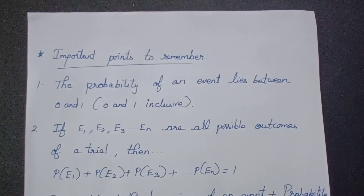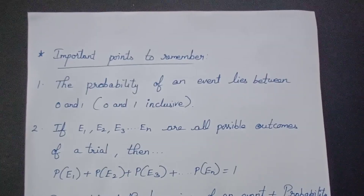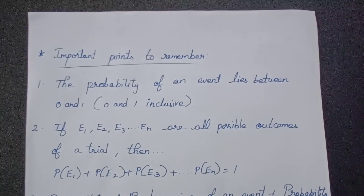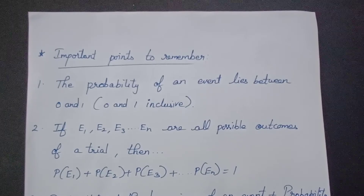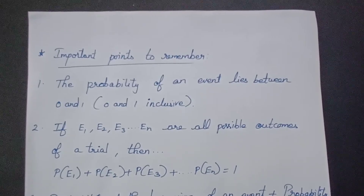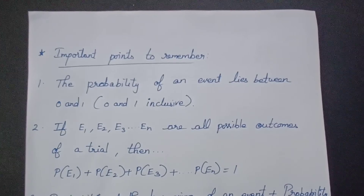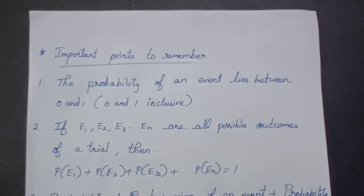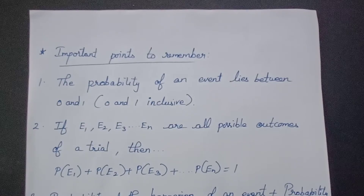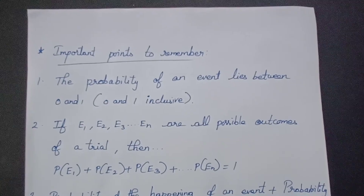Last class we covered empirical probability versus theoretical probability. Empirical probability gives only an approximate value, whereas theoretical probability gives the exact value. The empirical probability gets closer to the exact value as we increase the number of trials.